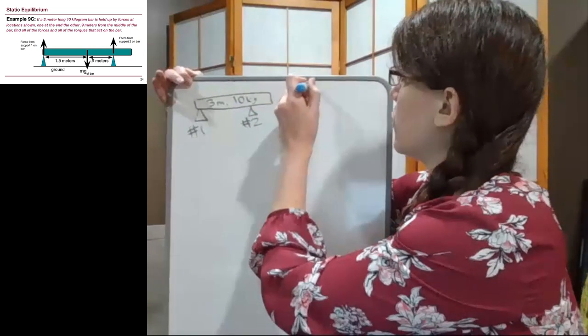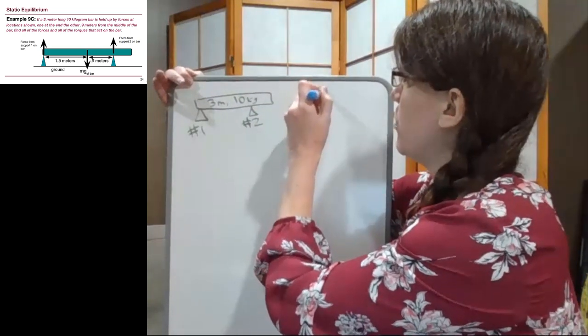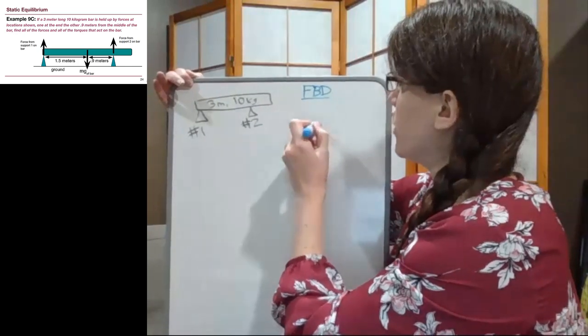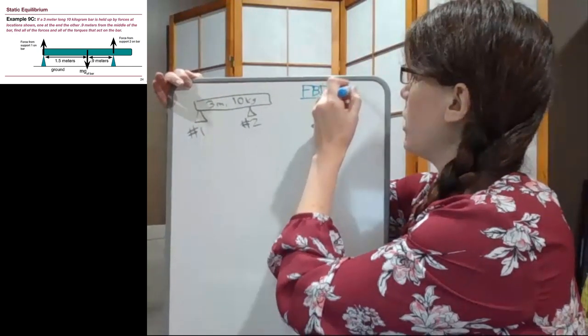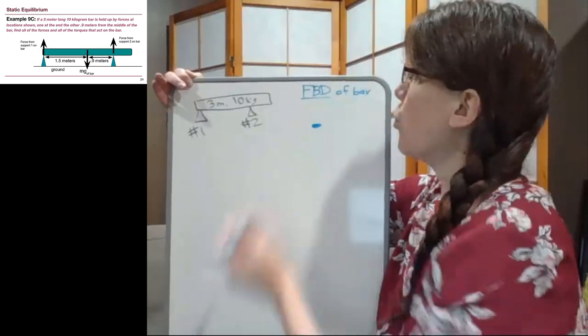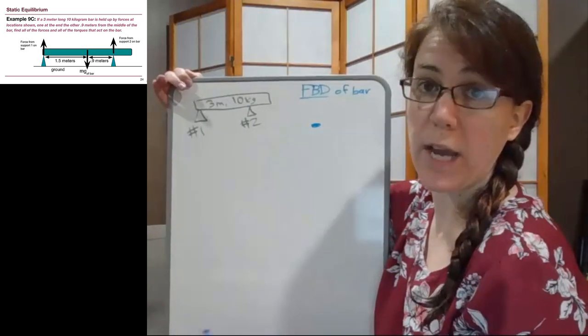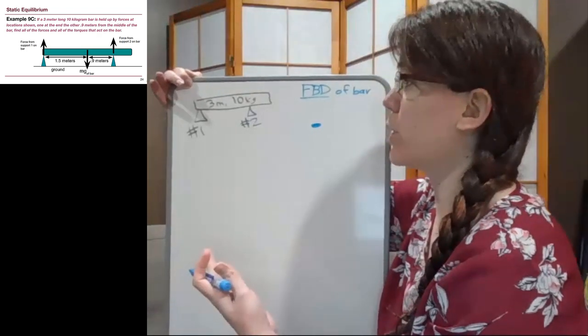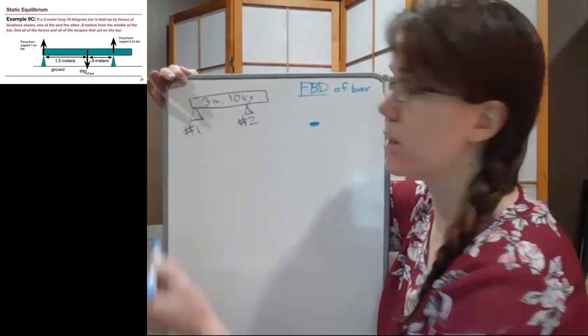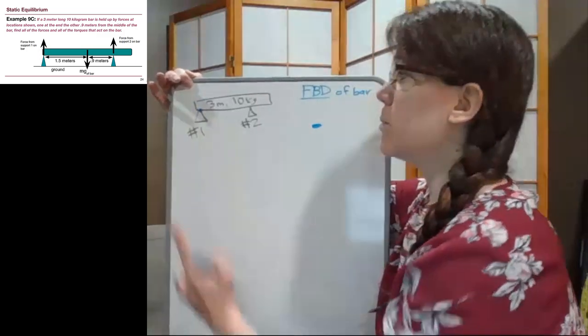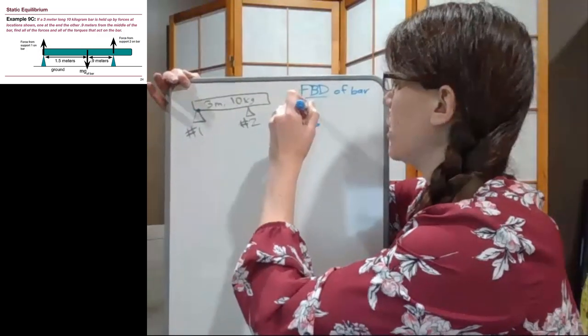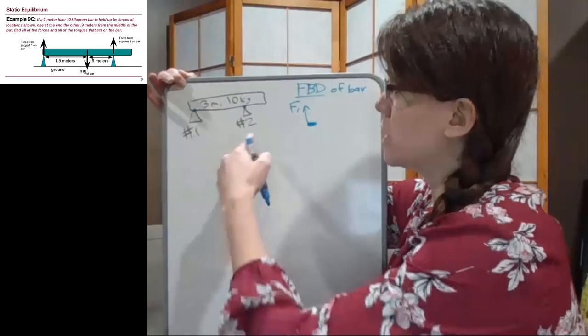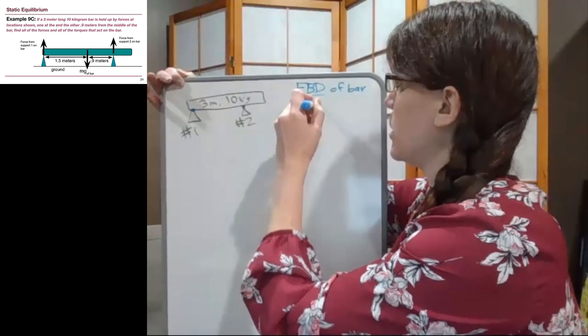Okay, so we have the force diagram or free body diagram. And so for the free body diagram of the bar, we want to think about what forces we have acting on this bar. And so we're looking at anything that is in contact with the bar plus the weight of the bar itself. So over here we have F1 pushing up on the bar. Over here we have force two, the support number two, pushing up on the bar.